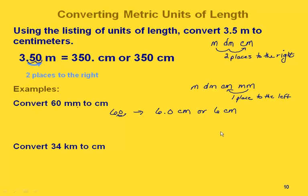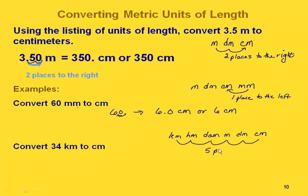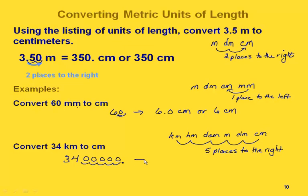Now let's convert 34 kilometers to centimeters. We need to write out more of our listing: kilometer, hectometer, decameter, meter, decimeter, centimeter. Going from kilometers to centimeters is five places to the right, so we move the decimal point five places to the right. Starting with 34, we add five zeros, and our decimal point ends up after all those digits, giving us 3,400,000 centimeters.